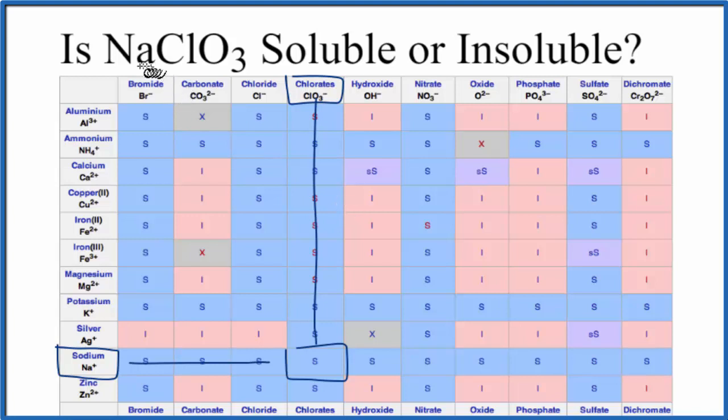So in answer to our question, NaClO3 is soluble in water. This is Dr. B. And thanks for watchin'.